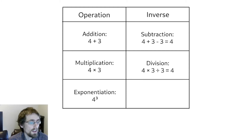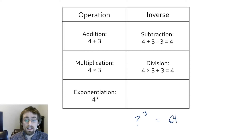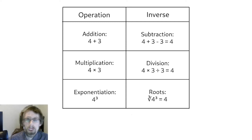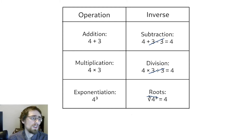Let's now look at exponentiation. Let's say I had a secret number, and I don't remember what it is. I remember that when I cube it, I get 64. Can we undo the cubing to know my original number? We just take the cubic root on both sides, and we get that the secret number must have been four. So to recap: subtraction cancels addition, division cancels multiplication, and roots cancel powers — we have the three basic operations and an inverse for each.